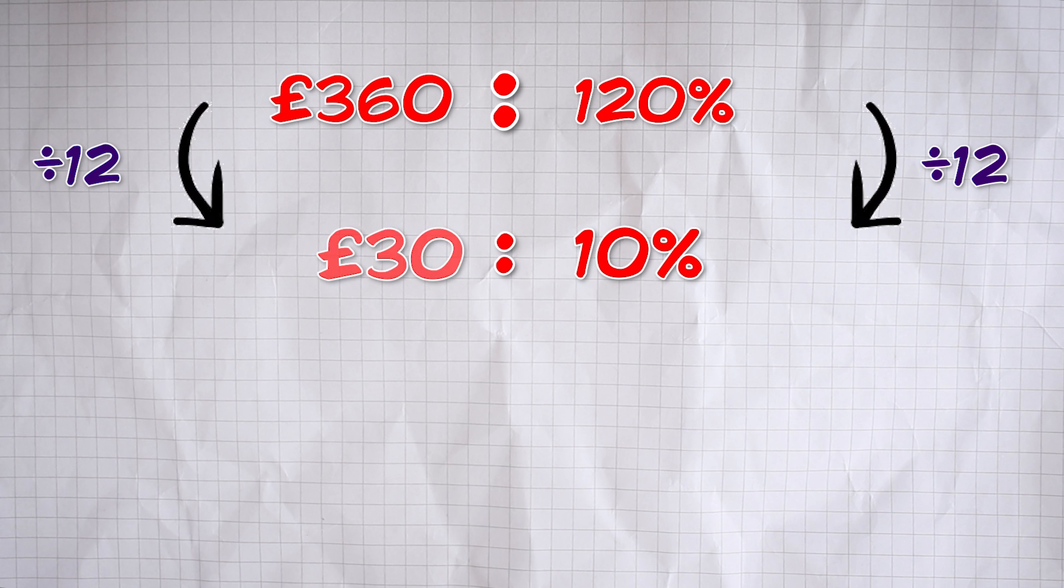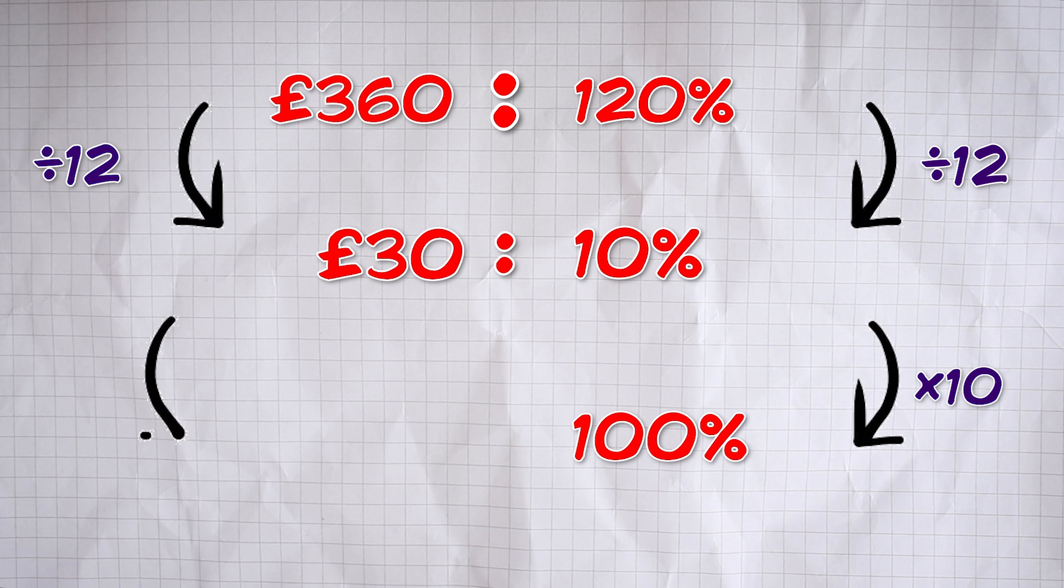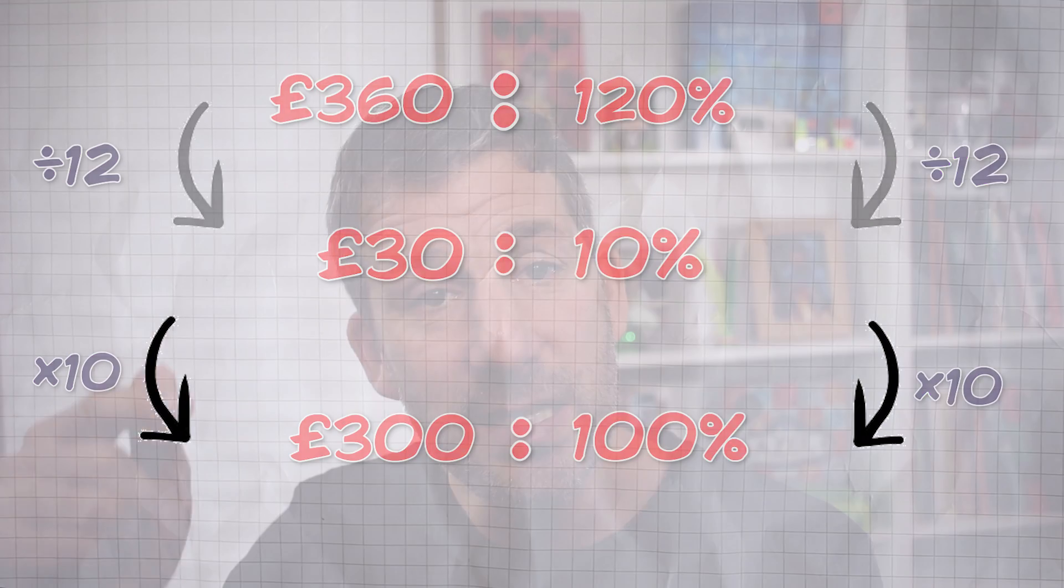Now, it's easy to multiply that right-hand side up to 100. You just have to multiply by 10 and we must multiply the left-hand side by 10 as well. And there we go. The original price was £300. Now, the reason I decided to divide by 12 was because I wanted to get a number that I knew I could easily multiply up to get 100 and it's easy to go from 10 to 100. You just multiply by 10.